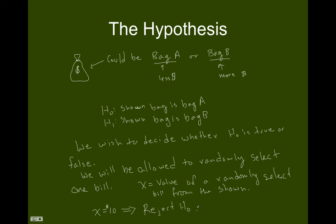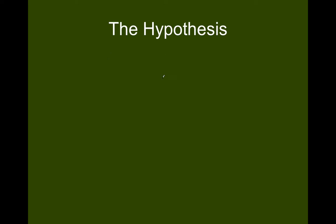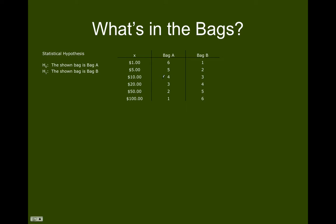It's quite possible that bag B has $10 bills in it as well, so it could be that the bill I pulled out was actually from bag B. The only thing I'm basing my decision on is that bag B has more money in it than bag A. Now let me give you more information about bag A and bag B. If I'm told what's actually in each bag, notice that there are four $10 bills in bag A and only three in bag B.